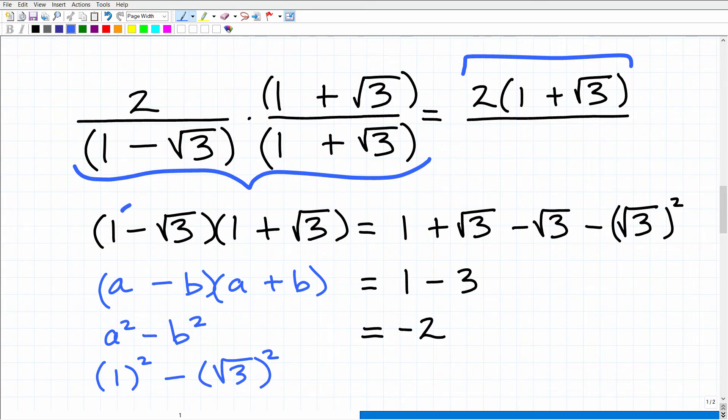So this would be 1 times 1. That's the first. That's 1. Then we have 1 times the square root of 3. That's a positive square root of 3. That's first, outer, inner. It's going to be negative square root of 3 times 1. So that's negative square root of 3. And then I have the square root of 3 times the square root of 3, or that would be the square root of 3 squared. So when I clean this up, I have 1 plus these cancel each other out. The square root of 3 minus the square root of 3 is 0. So that's going to be minus the square root of 3 squared, which, of course, is 3. So 1 minus 3 is negative 2. So this would be a negative 2 down here.